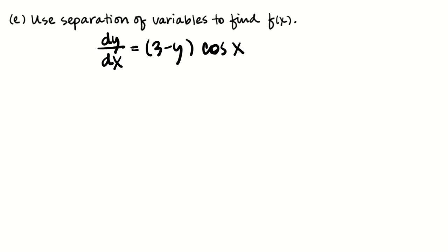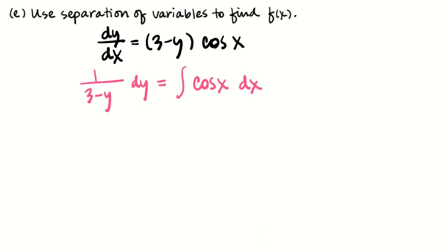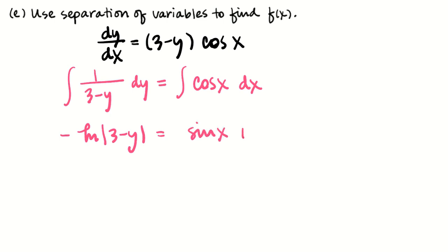Now I'm going to quickly remind you about how separation of variables works. We have to disconnect x and y with multiplication or division, so I'm going to divide by (3 minus y) and multiply both sides by dx, giving cosine x dx. Then I anti-differentiate both sides. An anti-derivative for 1 over (3 minus y) with respect to y would be log of the absolute value of (3 minus y). I check by taking the derivative: I get 1 over (3 minus y) times negative 1 for the chain rule, but I don't have negative 1 over (3 minus y), so I need to make that a negative.